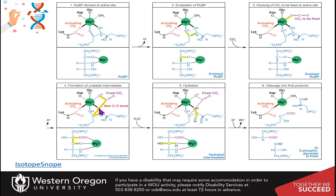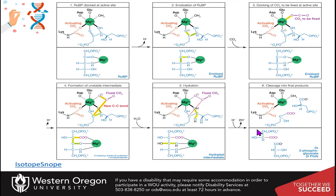You're adding water across that double bond, and this forms a very unstable intermediate after hydration. This leads to the cleavage of the product into two molecules of 3-phosphoglycerate. By the time the product is actually released from the active site, it's already the 3-phosphoglycerate — this intermediate really does not hang around very long.